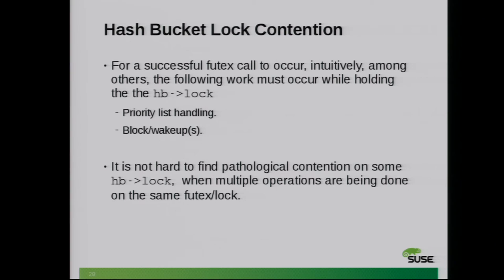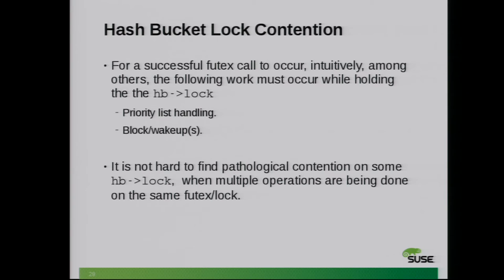It's really not hard to find pathological contention on the HB lock — not because of collisions or working with huge amounts of locks, but because large systems in my experience tend to operate on just a handful of futexes. So you have a lot of CPUs going after three, four, five, ten futexes, and that will generate a lot of contention on the lock.